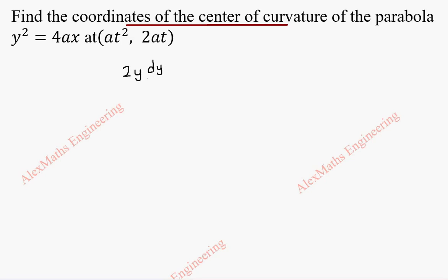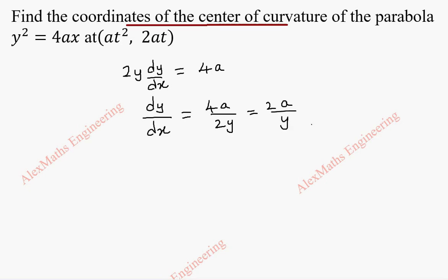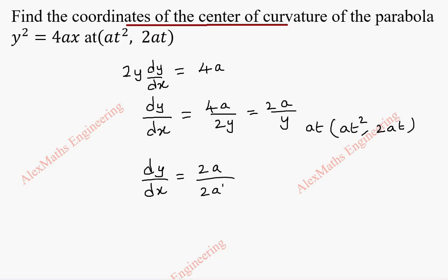Differentiating: 2y dy/dx equals 4a, so dy/dx is 4a divided by 2y, and after cancelling, this is 2a by y. Now we have to use the point (at², 2at). So dy/dx will become, substituting the value of y as 2at, after cancelling we get 1 by t.